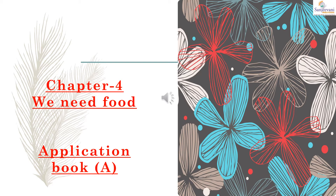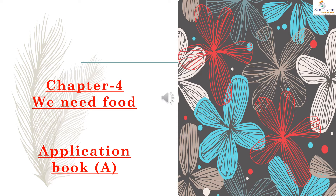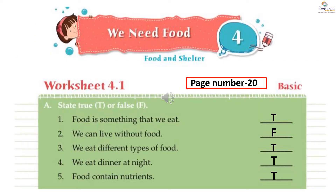So let us start with application book A, chapter number 4, We Need Food. In application book A, chapter number 4, we will complete worksheet 4.1 A and B, worksheet 4.2 A, B and C, and worksheet 4.3 A and B. We are starting with worksheet 4.1 on page number 20. The activity is: state true or false.